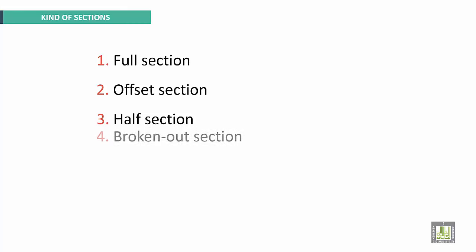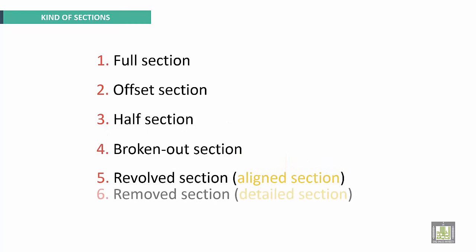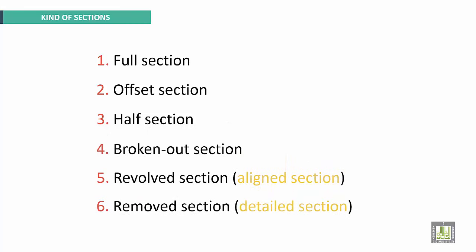Many kinds of sections are present in engineering drawing. The first one is called Full Section, second Offset Section, third Half Section, Broken Out Section, Revolved Section, Aligned, and Removed Section — also called Detailed Section.